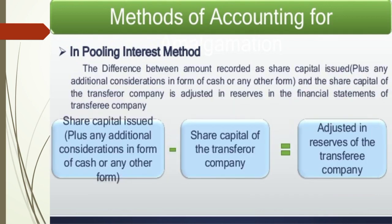Also in the pooling of interests method, the difference between the amount recorded as share capital issued plus any additional consideration in the form of cash or any other form, and the share capital of the transferor company, is adjusted in reserves in the financial statements of the transferee company. That is: share capital issued plus additional consideration minus share capital of the transferor company equals adjustment in reserves.